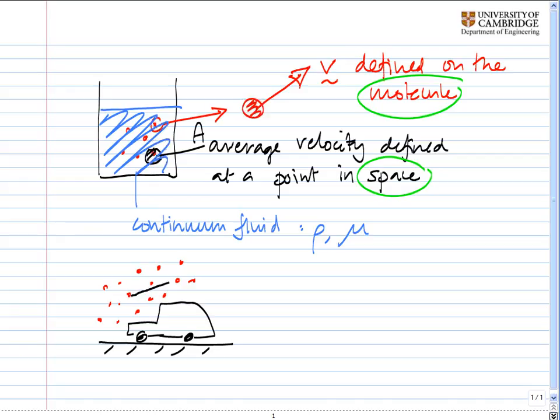Well, what we can think about with the molecule is how far it goes before it hits another molecule. That is called the mean free path. And it's generally given the symbol lambda. We need to compare that with a typical distance of the car, a characteristic distance of the car, which I'm going to call L.